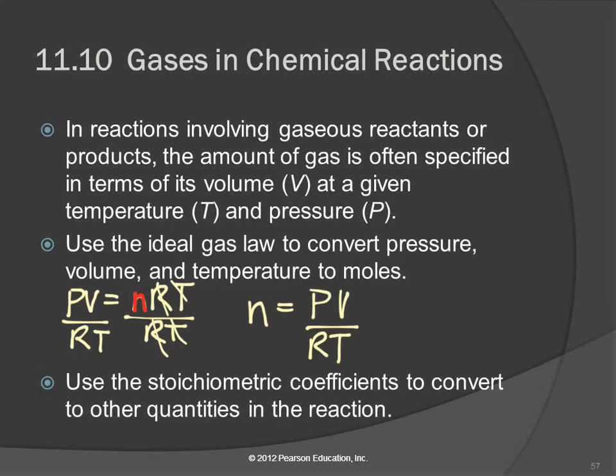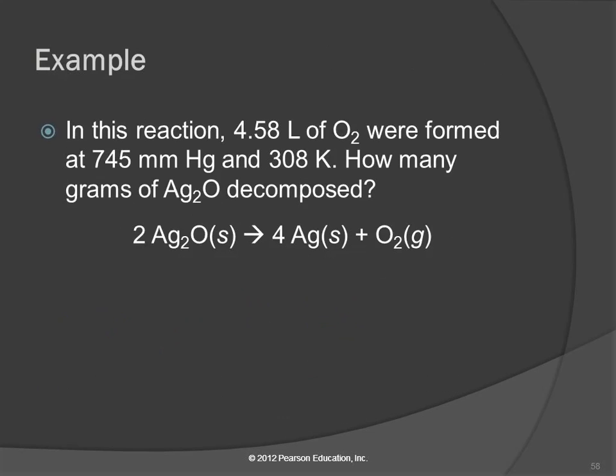So we can do stoichiometry with a twist, whether either a reactant or a product is a gas, or it could be both. We can use the ideal gas law to convert the gas information into moles, and then continue with our regular stoichiometry process.